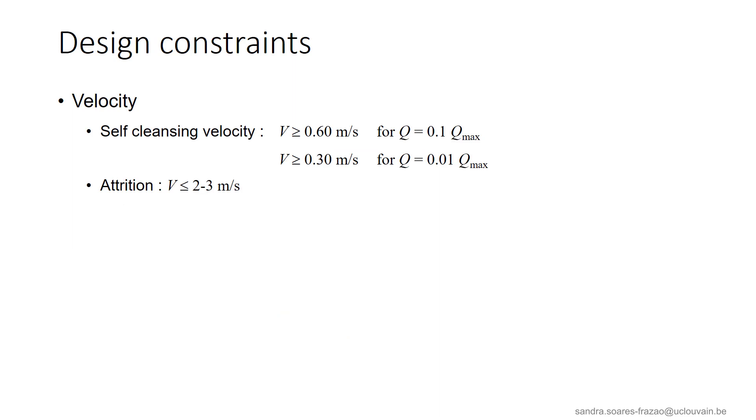The design of a sewer pipe is not restricted to the pipe diameter, of course. We also need to account for some practical constraints. The flow velocity in the sewers has to be such that the suspended materials in sewage are not silted up. That is, the velocity should be sufficient to cause automatic self-cleansing effect and avoid sedimentation. The velocity should also be limited to 2 or 3 meters per second to prevent attrition of the pipe.